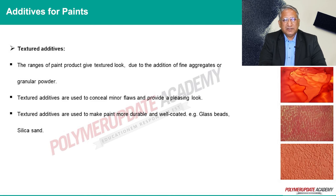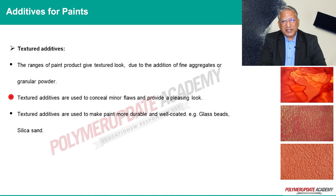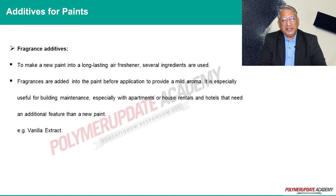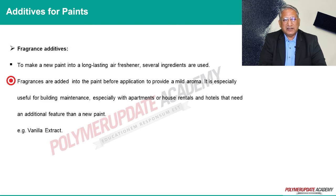Textured additives: a range of paint products with a textured look can be manufactured by addition of fine aggregates or granular powder. Textured additives are used to hide minor imperfections and give pleasant appearances. Fragrance additives: some additives are added to turn a new paint into a long-lasting air freshener. These additives are mixed into paint before application to provide a subtle fragrance.